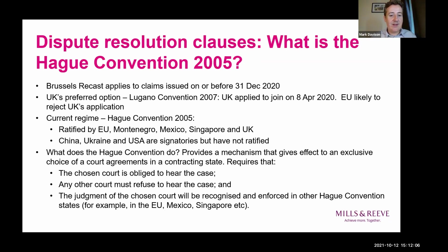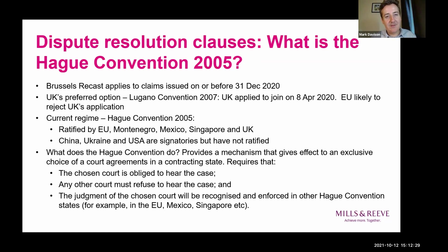So we're going to have to rely on the Hague Convention for a relatively straightforward mechanism for enforcing judgments from the UK against EU counterparties. The Hague Convention deals with choice of court agreements between commercial parties. It's been ratified by the EU, Denmark, Mexico, Montenegro and Singapore, but not by any other Lugano states — Switzerland, Iceland and Norway are out. The UK joined in its own right as of the 1st of January 2021, and the EU didn't have a right to block that.